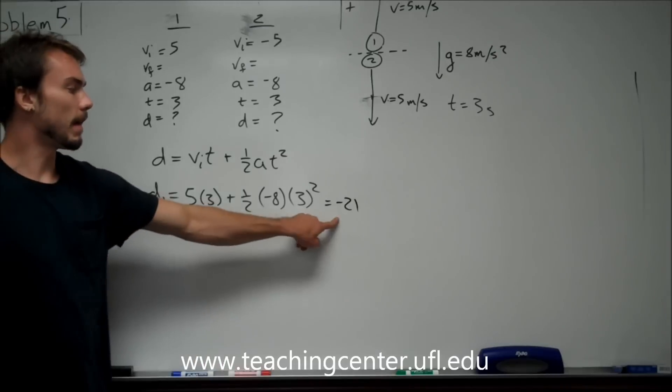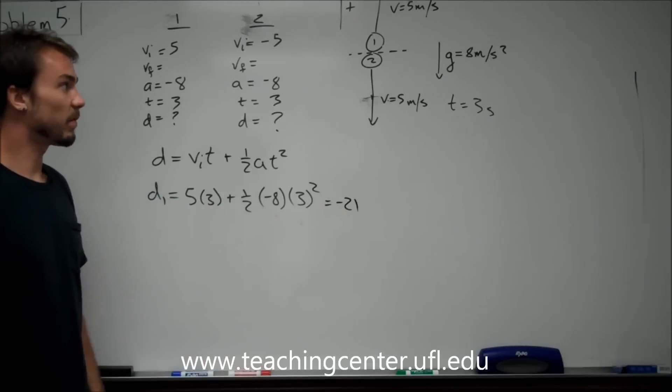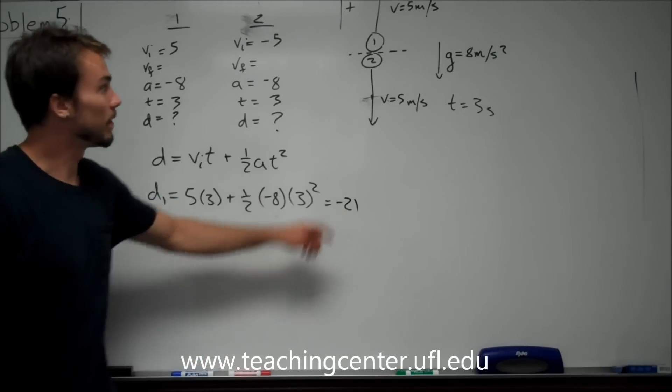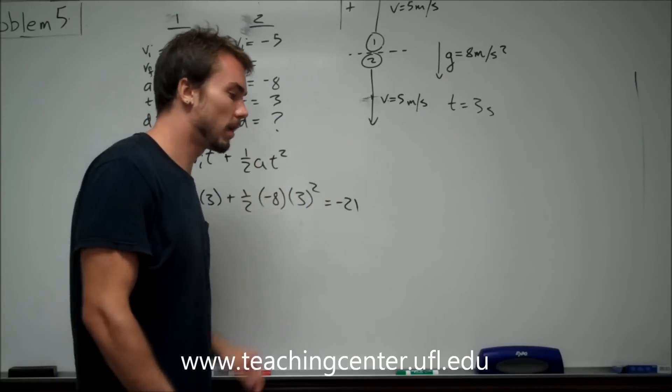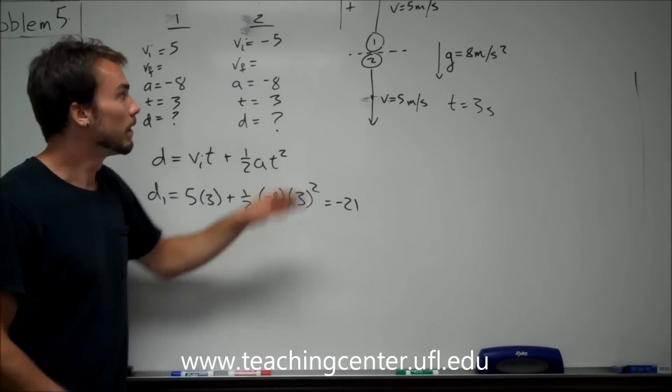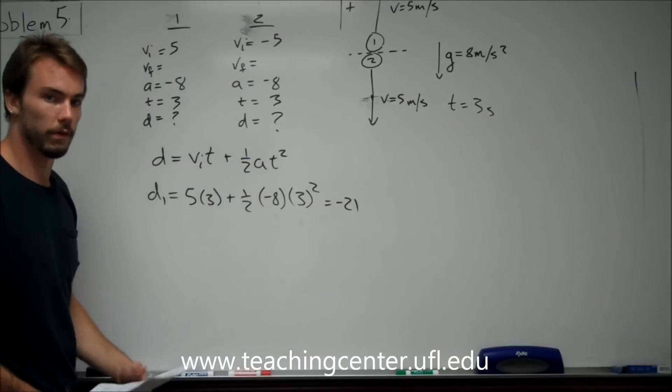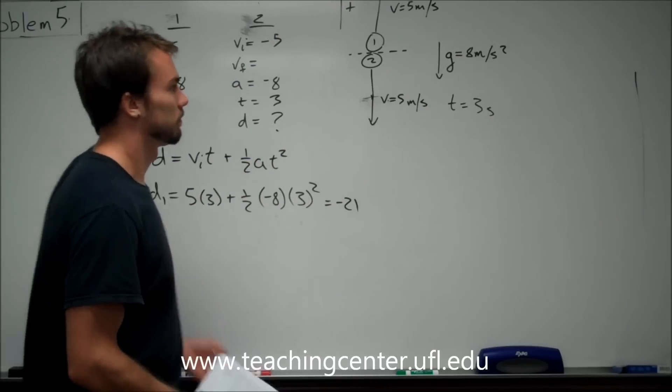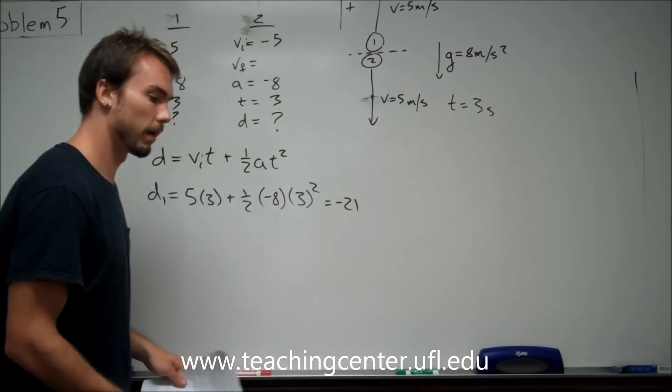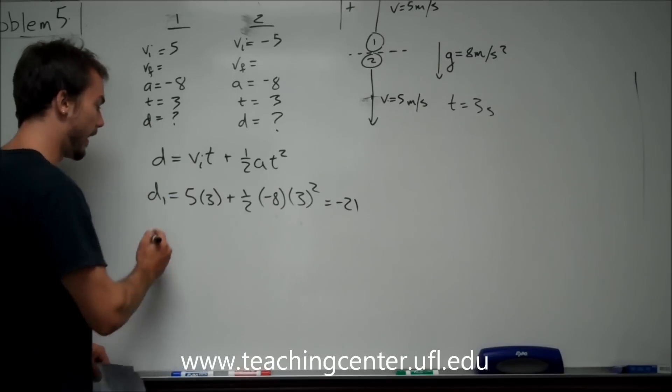Now, this negative sign means the displacement vector points downwards, which means, after 3 seconds, it's below where it started by 21 meters. Just keep track of what's going on in the problem. It goes up and comes back down in 3 seconds. You only threw at 5 meters per second, so, 8 meters per second squared is bigger than that. It's not going to take too long to fall back down.